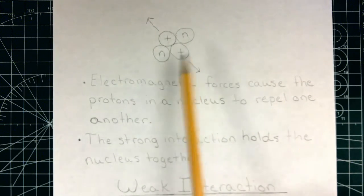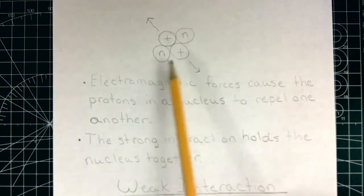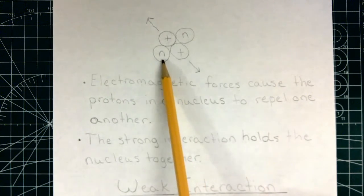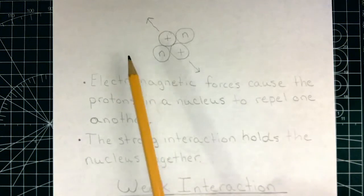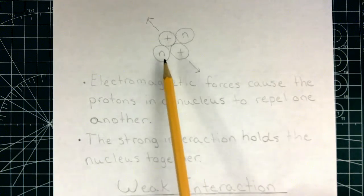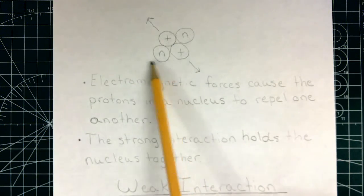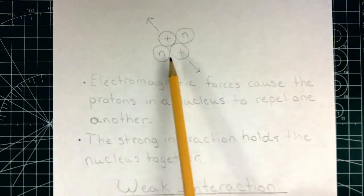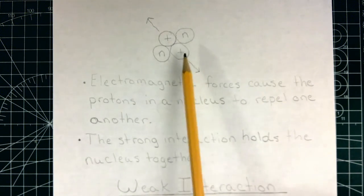That is what particle accelerators are attempting to do. They take some of these very basic particles and smash them into each other at really high speeds in order to break them apart and figure out what is inside of a neutron, what is inside of a proton.